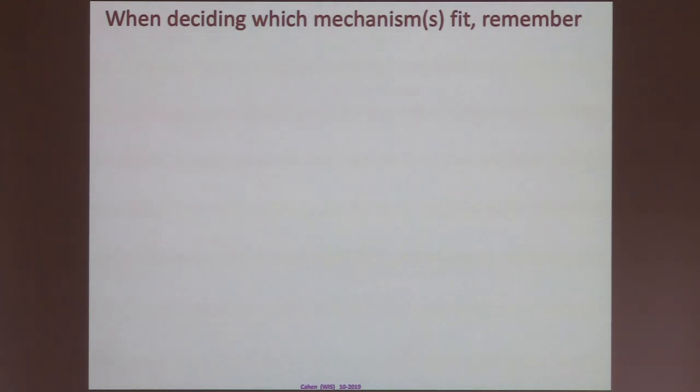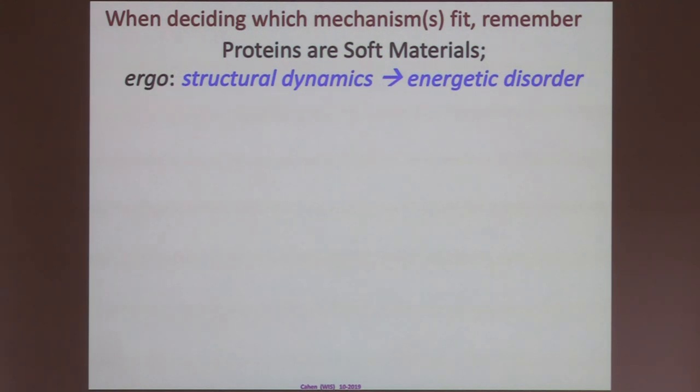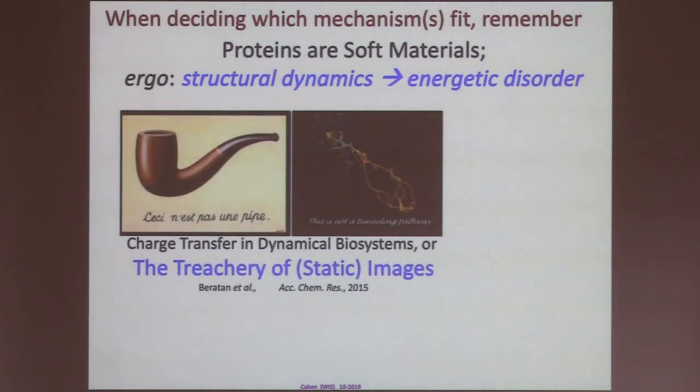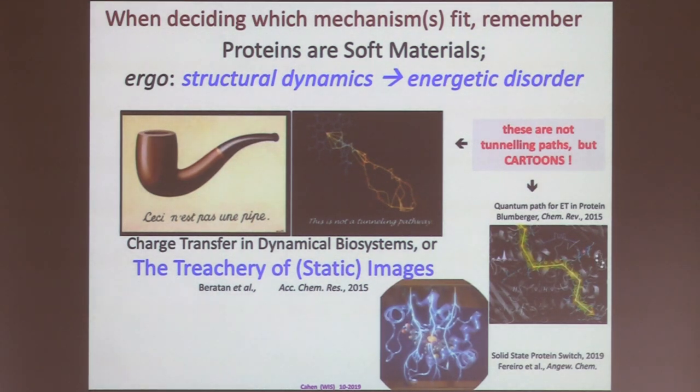Now, there are other mechanisms, but these are the main ones that are in the literature. And we'll do everything we can, because science is conservative. As a scientist, we are conservatives. To see if we can fit it. So, but when deciding to fit, we have to remember a few things. That the proteins are soft materials, and that means that they are structural dynamics and an energetic disorder. And I like this picture very much, which is the picture from the paper by David and others. And Magritte, this is not a pipe. And in the English translation, he took his own picture and said that this is not a tunneling pathway. It's a picture of a tunneling pathway. It's a cartoon. And so, we have beautiful cartoons. And it helps us to understand. And that's fine, as long as we remember the treachery of static images.